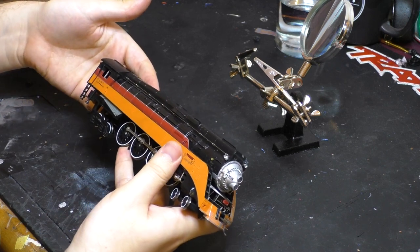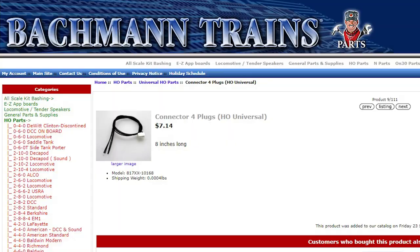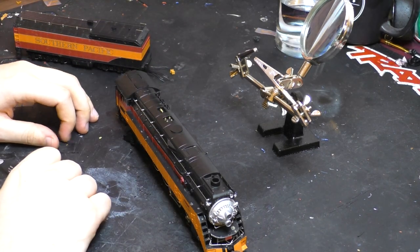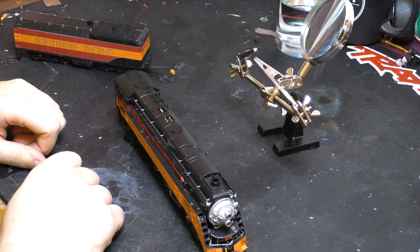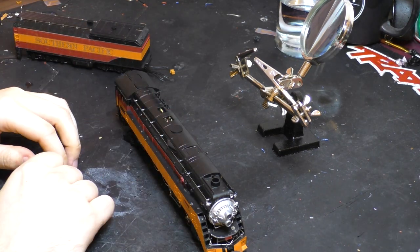Now the correct way to fix this and the way that I recommend all of you fix this if it happens to you is to order a new wiring harness from the Bachmann parts department, take the old one out and solder the new one in. However, since this isn't my engine I'm not going to spend any money on it nor am I going to wait for shipping from the Bachmann parts department so instead I'm going to embark on a very ill-advised endeavor and try to fix the existing wiring harness.